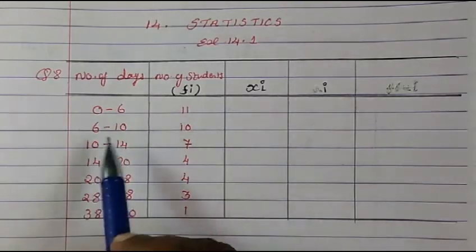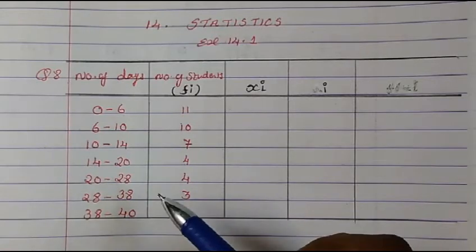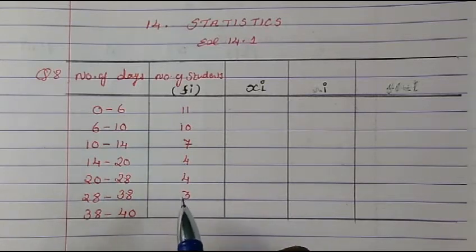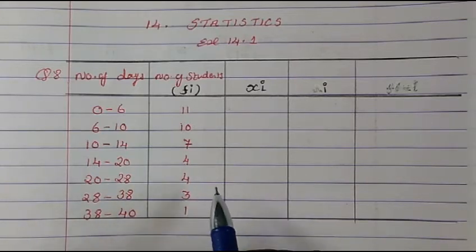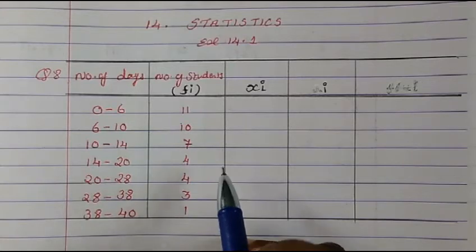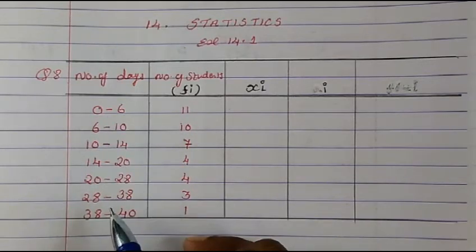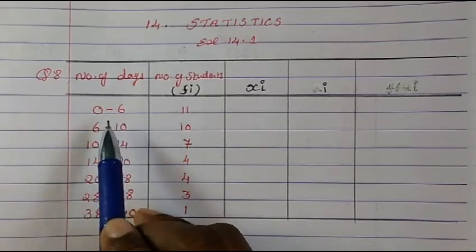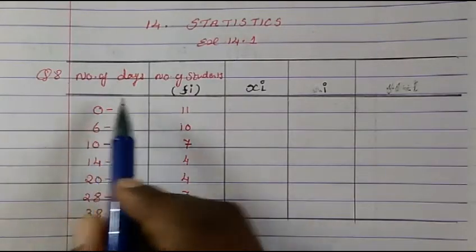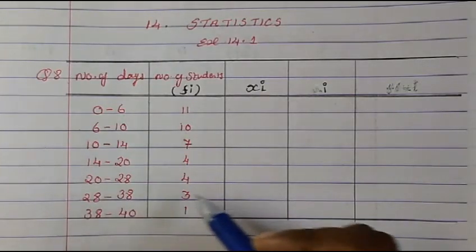For the previous sums I used the step deviation method, and you can use whichever method you want, but in this particular sum we cannot do step deviation method. Before deciding which method to use, you always have to check the class interval. The common difference should be the same — only then can you use the step deviation method. If not, go for the direct method or assumed mean method.